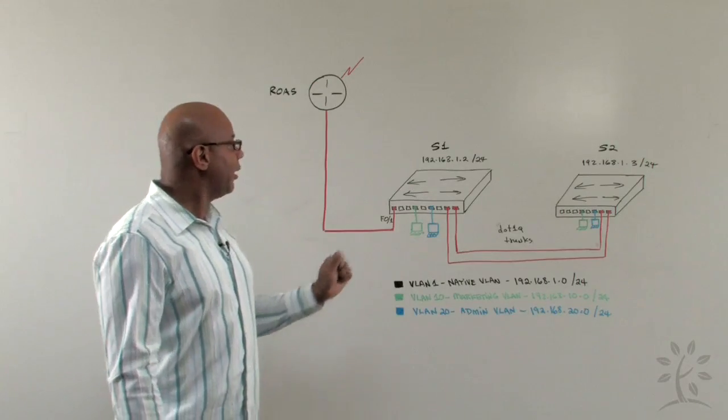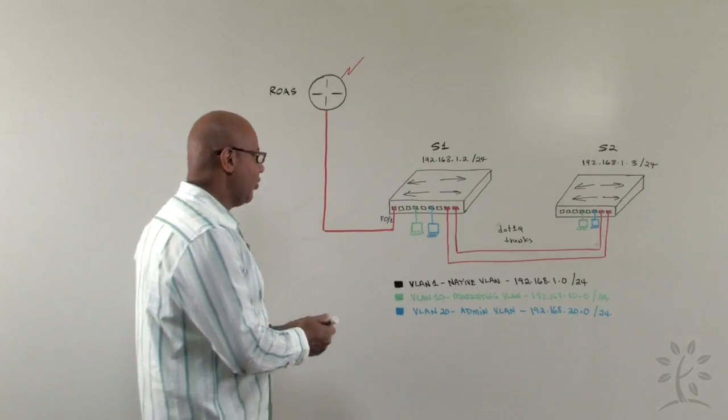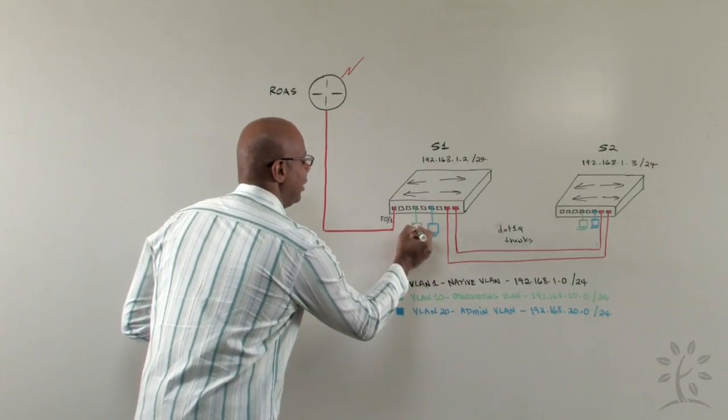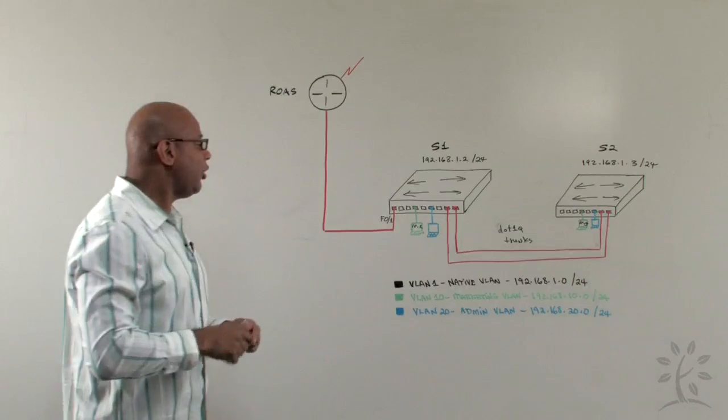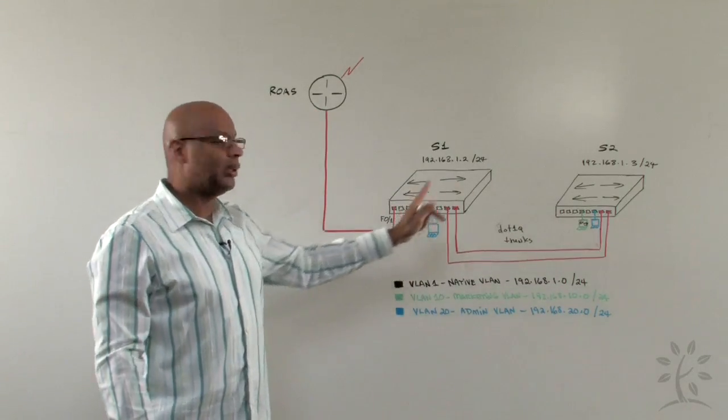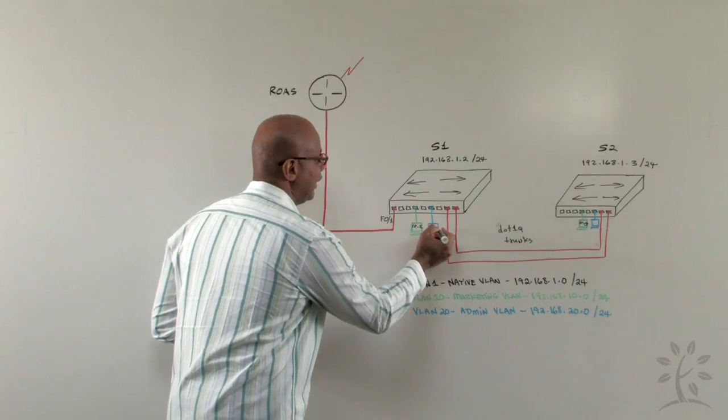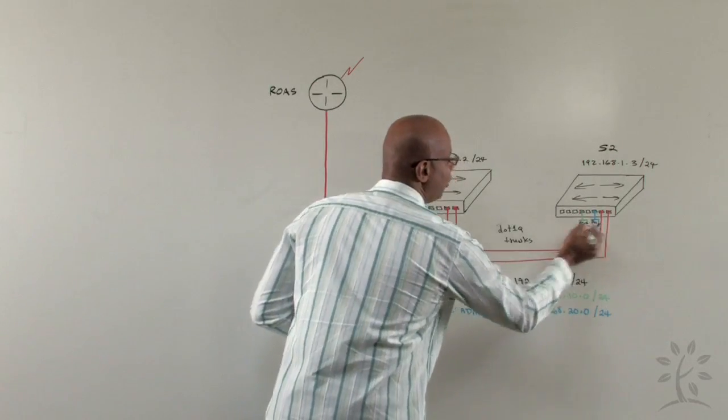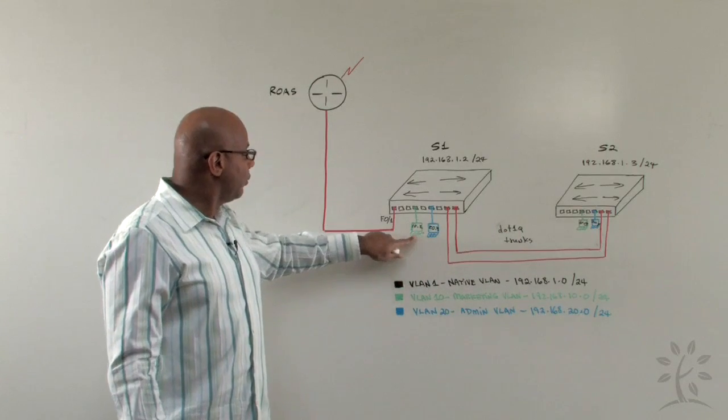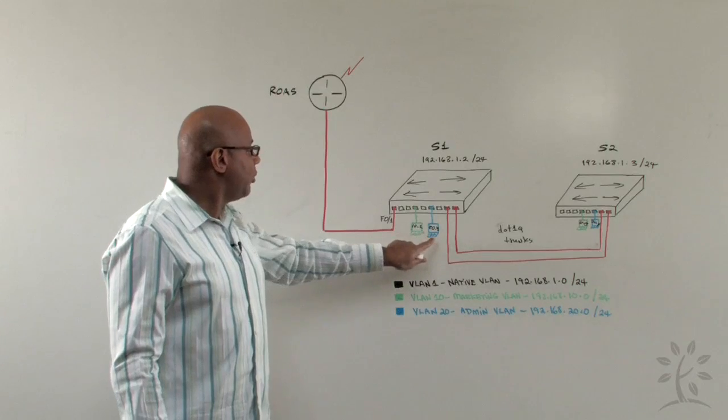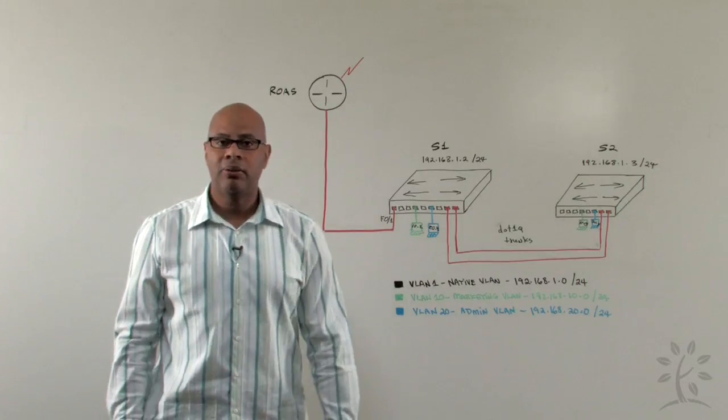However, without having inter-VLAN routing configured on this particular router, these two VLANs cannot communicate with each other. In other words, if I have this particular host, which would be given an IP address of 10.2, and this one 10.3, they can communicate with each other switch to switch because they're on the same VLAN. The blue hosts on VLAN20 would be given IP addresses like 20.3 and 20.4. The blues could also communicate with each other because they're on the same VLAN. However, the hosts on VLAN10 cannot communicate with hosts on VLAN20, even if they're plugged into the same switch, without configuring router on a stick or inter-VLAN routing.